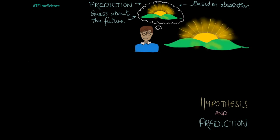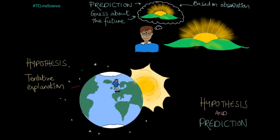A hypothesis is different. A hypothesis is a tentative explanation of those observations. In this case, the rising sun. I could say that the sun appears to rise because we're all sitting on a rotating ball of rock out in space, and that rotation makes the sun pop up over the horizon in the east every day.